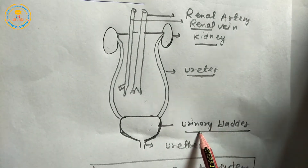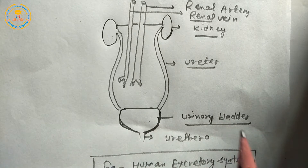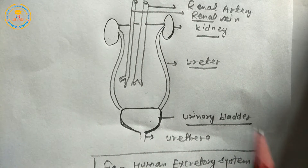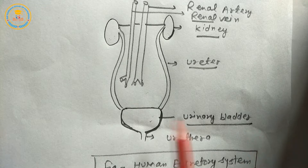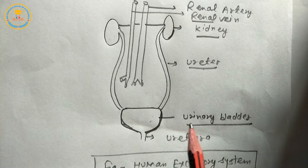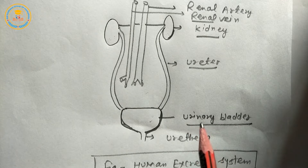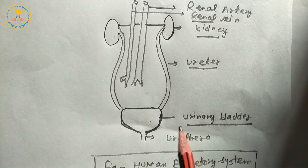Next: urinary bladder. Number: one. It is a muscular structure. Function: to store urine as a temporary form, approximately 500 to 600 ml.